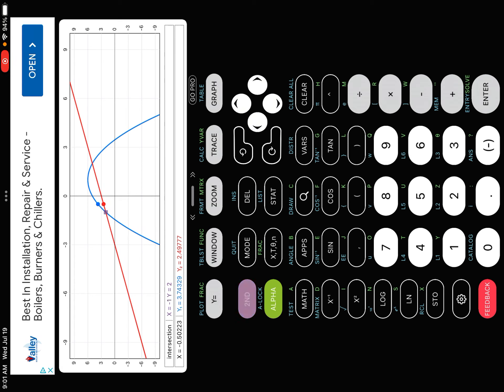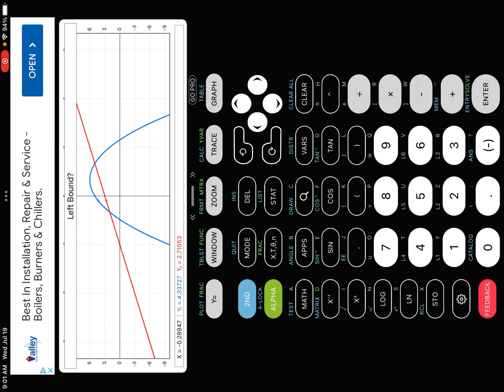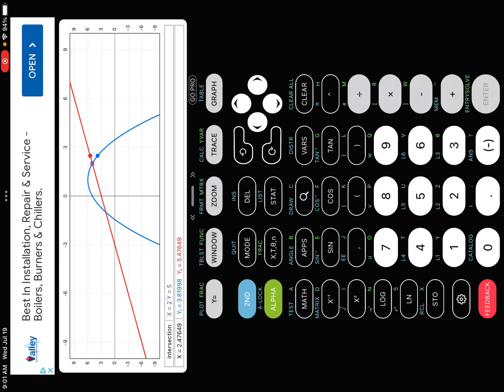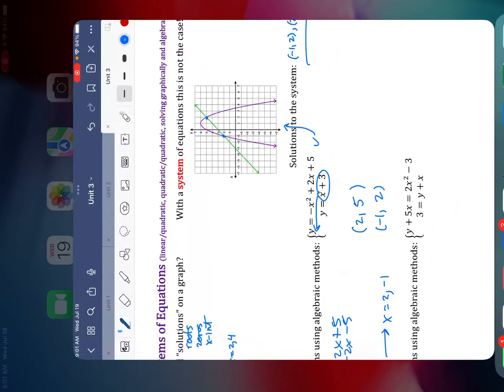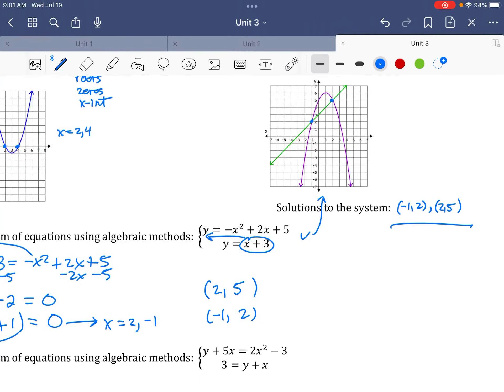All right. And so if I want the other one, second calc, number five. This time I'm going to go over close to the other one. The left side of it is right about there. The right side of it is over here. And there's my intersection two, five. Like I said, though, on your calculator, on your handheld one, you just press enter three times. But you do have to be closest to the intersection that you want. Okay. All right.